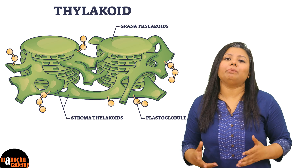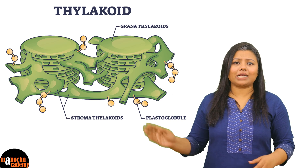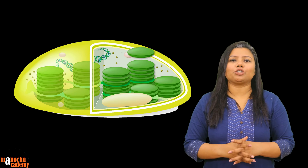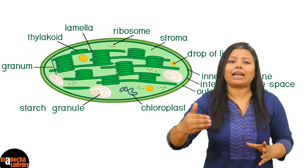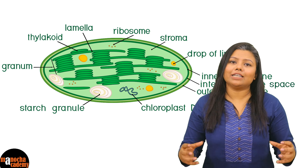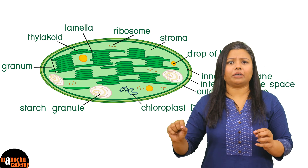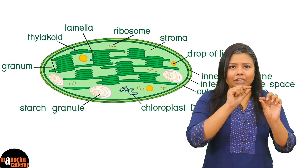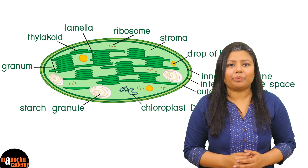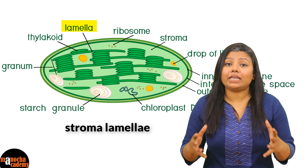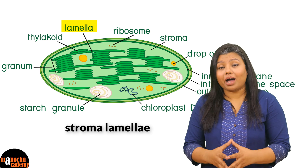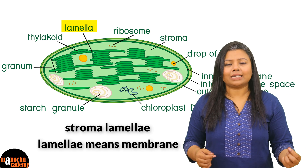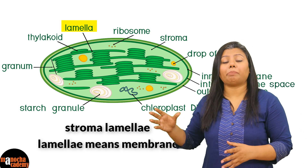The thylakoids contain chlorophyll pigment, which is why these thylakoids are also known as photosynthetic thylakoids. The thylakoids are usually stacked one above the other like a pile of coins to form a granum. Several grana are present inside the chloroplast in the stroma and they all remain connected with each other by fine membranes. These membranes are also membranes of the thylakoid and they connect one granum to the other. We call these membranes stroma lamellae — the term lamella means membrane, and stroma lamellae run through the stroma and are not a part of the grana.